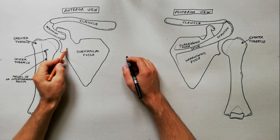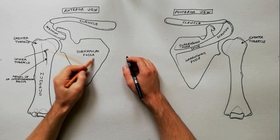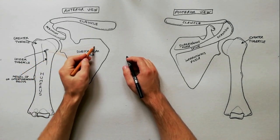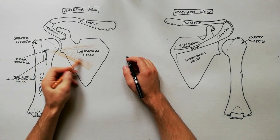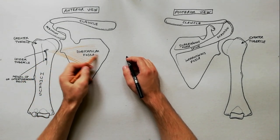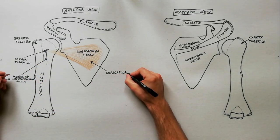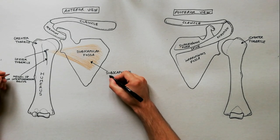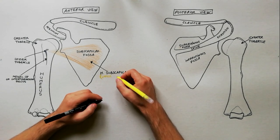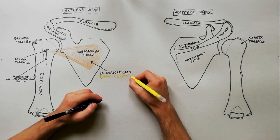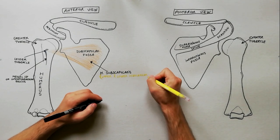The subscapularis muscle originates from the subscapular fossa. Its fibers converge laterally to be inserted on the lesser tubercle of humerus. Subscapularis is supplied by the upper and lower subscapular nerves.